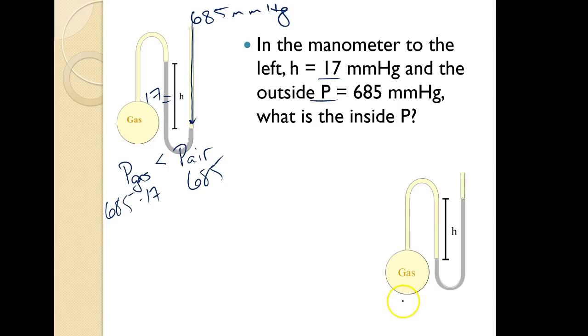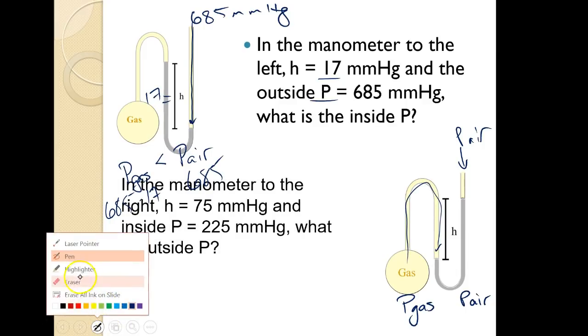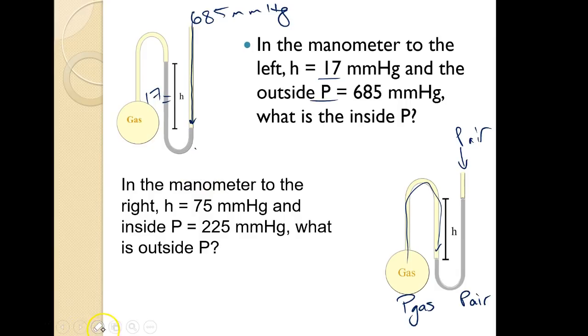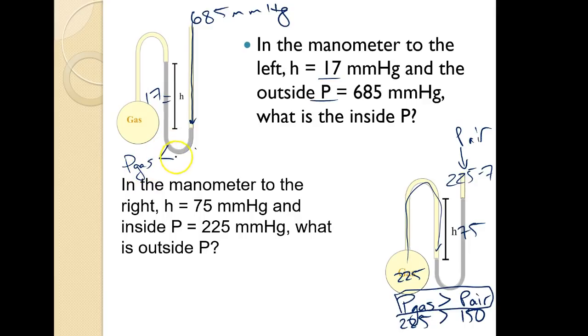Now, let's look at this one. Again, you want to think about the pressure of the gas compared to the pressure of the air. So the pressure of the air is pushing down here. The pressure of the gas is pushing down here. So in this problem, the H value is given as 75, and the inside pressure is 225. Again, pressure of the gas is greater than the pressure of the air because of the pushing. That means 225 has to be greater than whatever the pressure of the air is. Well, the pressure of the air would be 225 minus 75. So it's 150. I want you to think about it in terms of where is the bigger number. That's what you always want to think about it and just make it work.